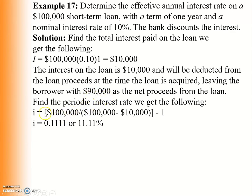The effective interest rate is: $100,000 / ($100,000 - $10,000) - 1 = 11.11%. So although the nominal interest rate is 10%, the actual effective rate is 11.11% because the interest was charged upfront at the beginning of the loan.